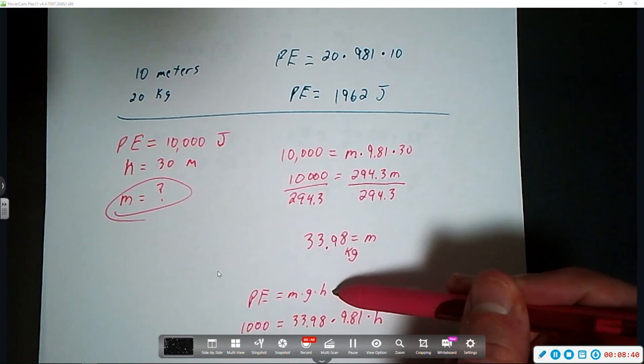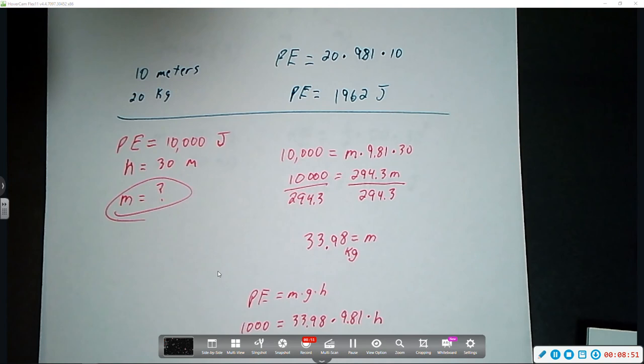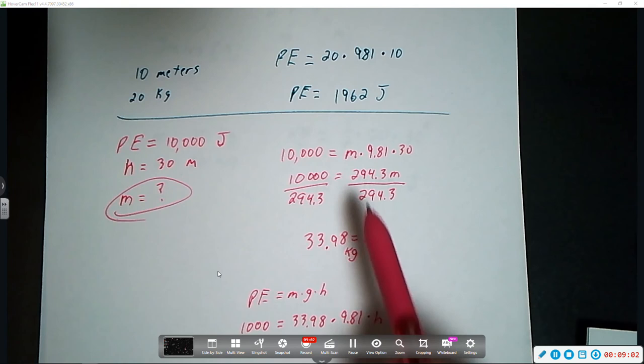So, that is how you can manipulate the potential energy equation in order to solve for either gravity, or for mass or for height. In theory, you could also use it to calculate gravity. If you knew the mass of an object and the height of an object, you would be able to calculate the gravity. However, I'm pretty sure all of the problems that we're going to be dealing with are measured on Earth. So, therefore, the gravity is always going to be this 9.81 figure.